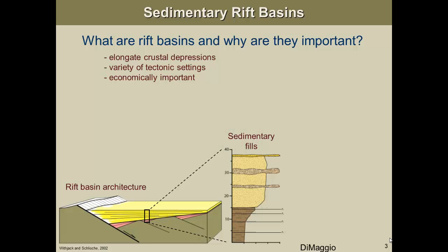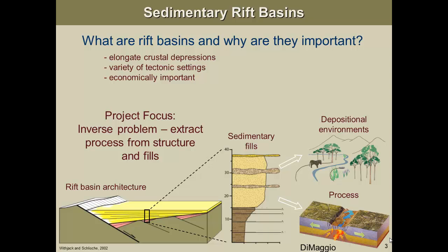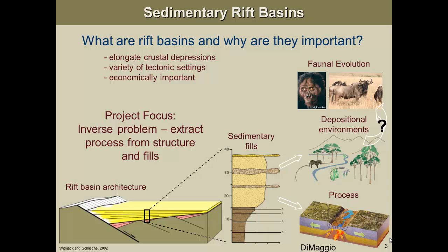Sedimentary rift basins are really important because they are elongate crustal depressions that fill with sediment, capturing the record of what's going on around them. We may see an asymmetric rift basin with coarser deposits near the main fault, getting finer-grained away from it. We can study depositional environments from these sedimentary basins and look at evolution — this is something being done at ASU. In the end it all goes back to understanding what the normal faults are doing and how they control the sedimentation.